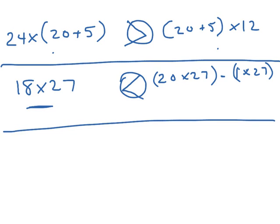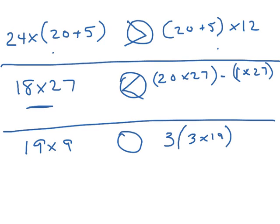The last example is 'c,' where the expression on the left is 19 × 9, and on the right they give us 'three nineteens tripled,' meaning 3 × (3 × 19). In this case they're going to be equal, because three times three is nine, so I have nine times nineteen — which is the same as nineteen times nine.